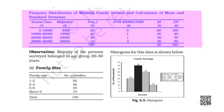Now let's discuss monthly family income status. There were around 20 households with income from 0 to 10,000; 40 households had income between 10,000 to 20,000; 30 households had income from 20,000 to 30,000; and around 10 households had income between 30,000 to 40,000.